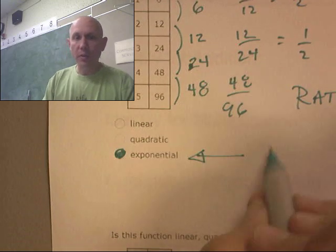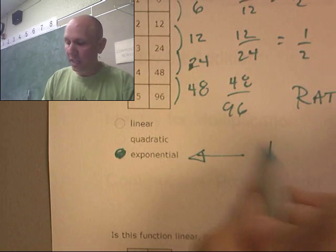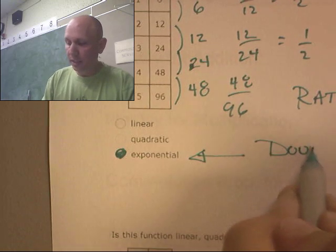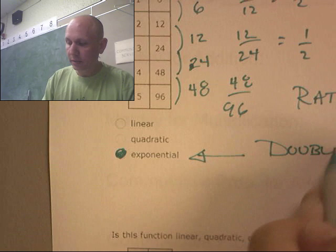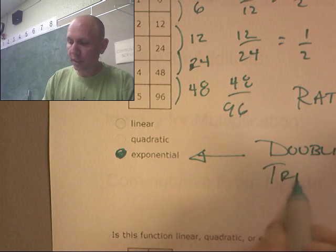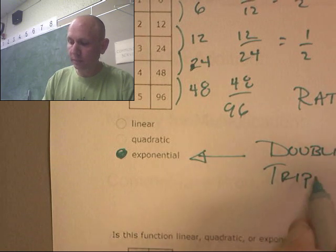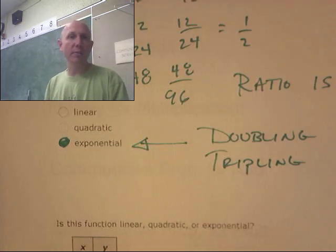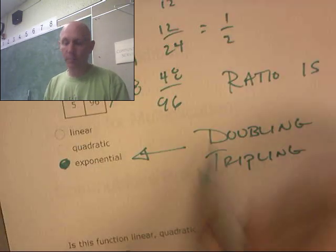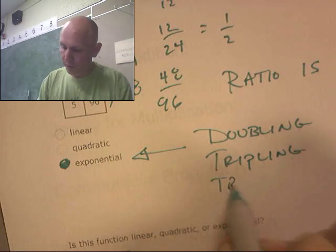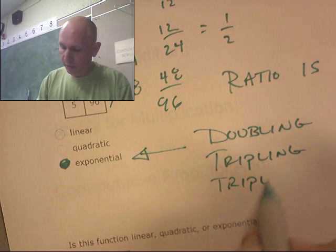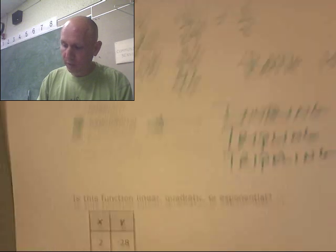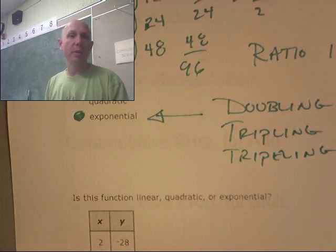Exponentials — when you're looking at doubling or tripling, that's a constant ratio, and that tells you it's an exponential function.